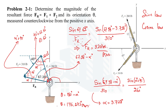So we have calculated the resultant force as 320 pounds and its orientation as 176.272 degrees measured counterclockwise from the positive x-axis. This video covered the calculation of resultant force and its orientation when two forces are given with their orientations. That's all — thank you for watching.